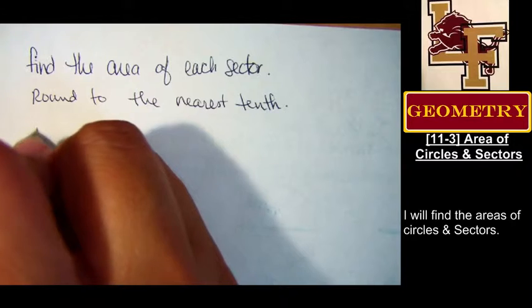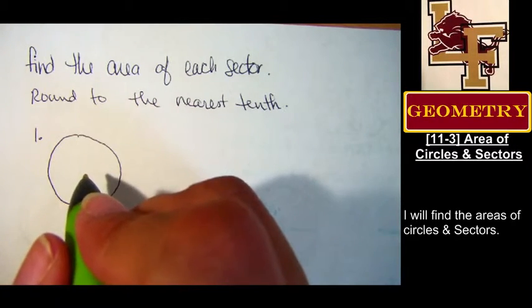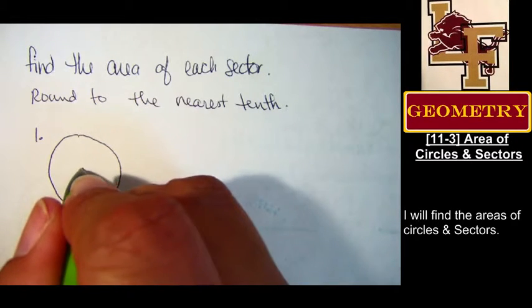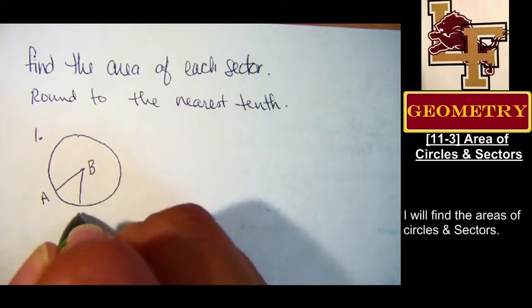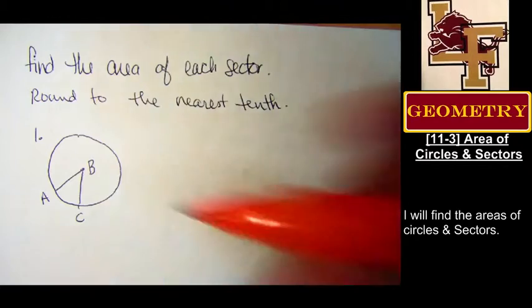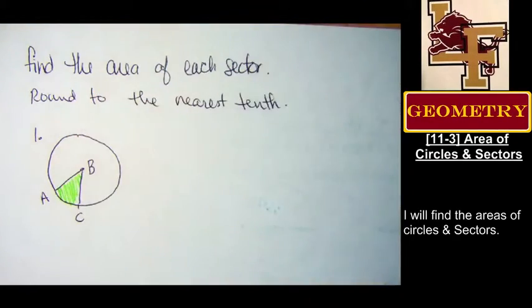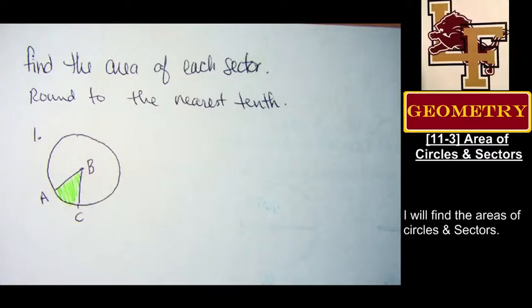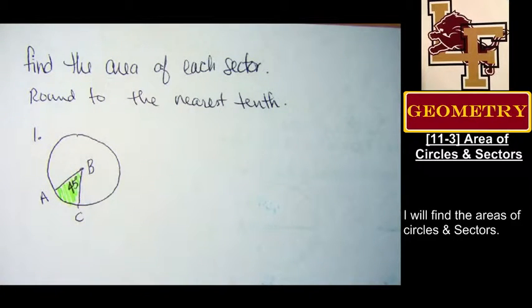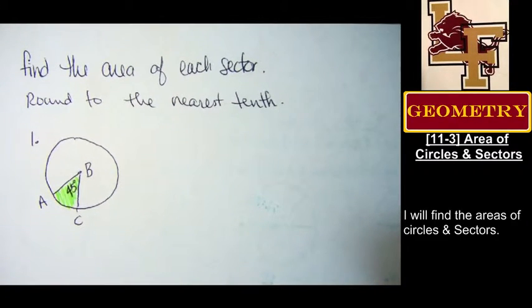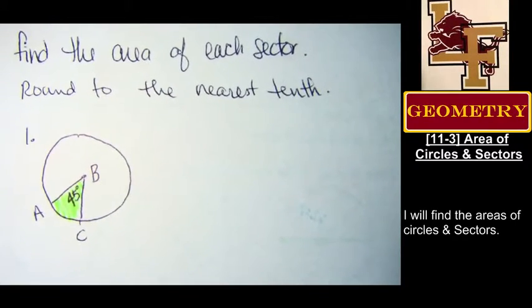We're going to do these by hand. No big deal. All right, here's the first one. Draw yourself your little pizza. Draw a slice of it. Color in that slice. Can you read that angle measure? Okay, good.